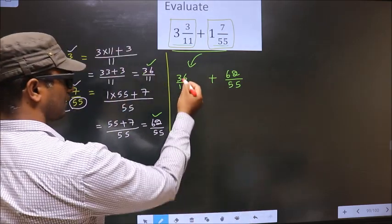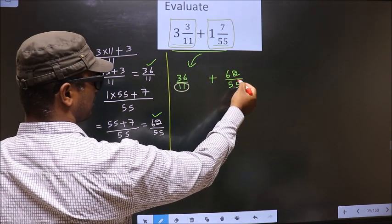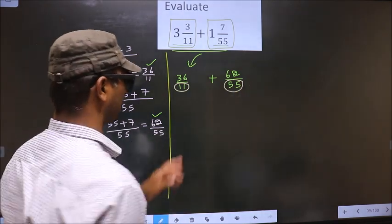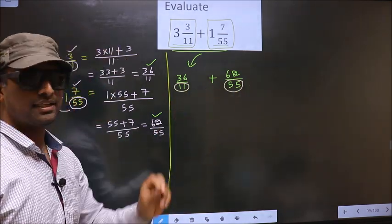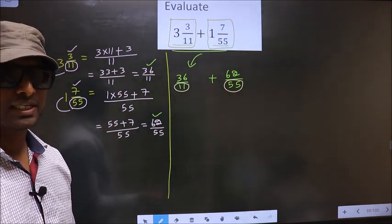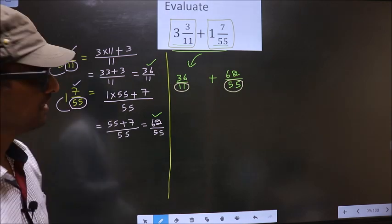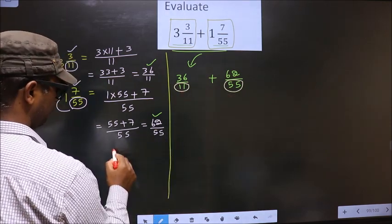Next, here the denominator is 11, here the denominator is 55. The denominators are not the same. Whenever the denominators are not the same, we should take LCM of them. So, the LCM of 11 and 55.